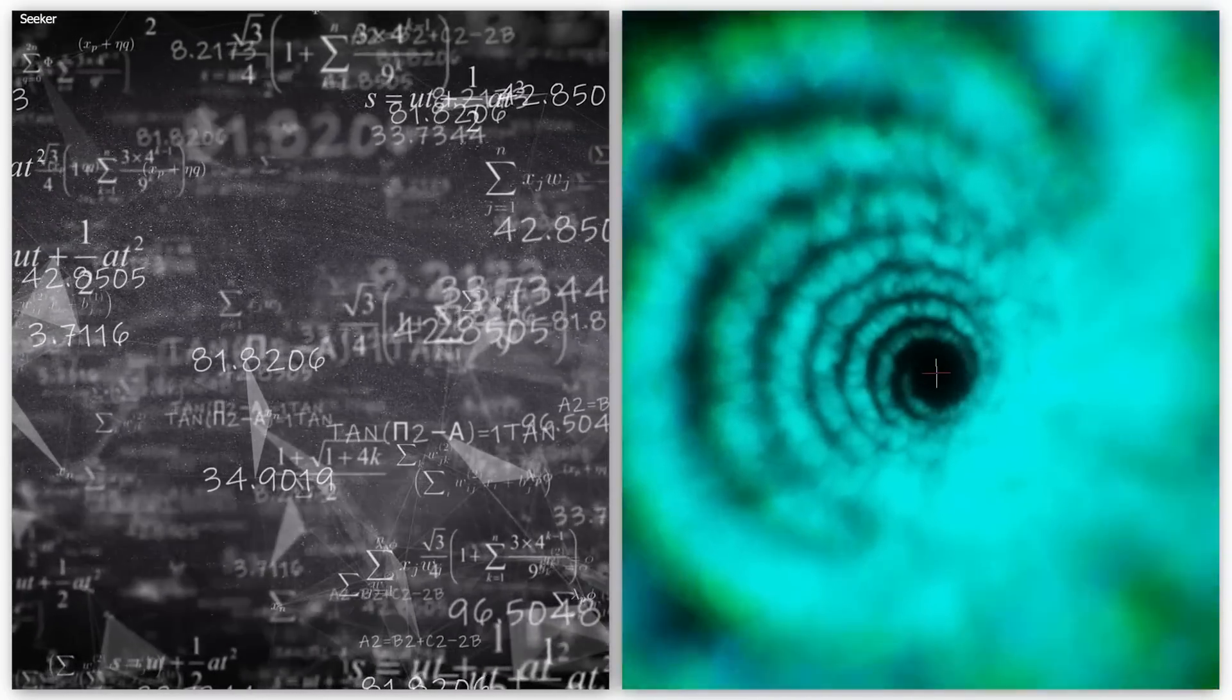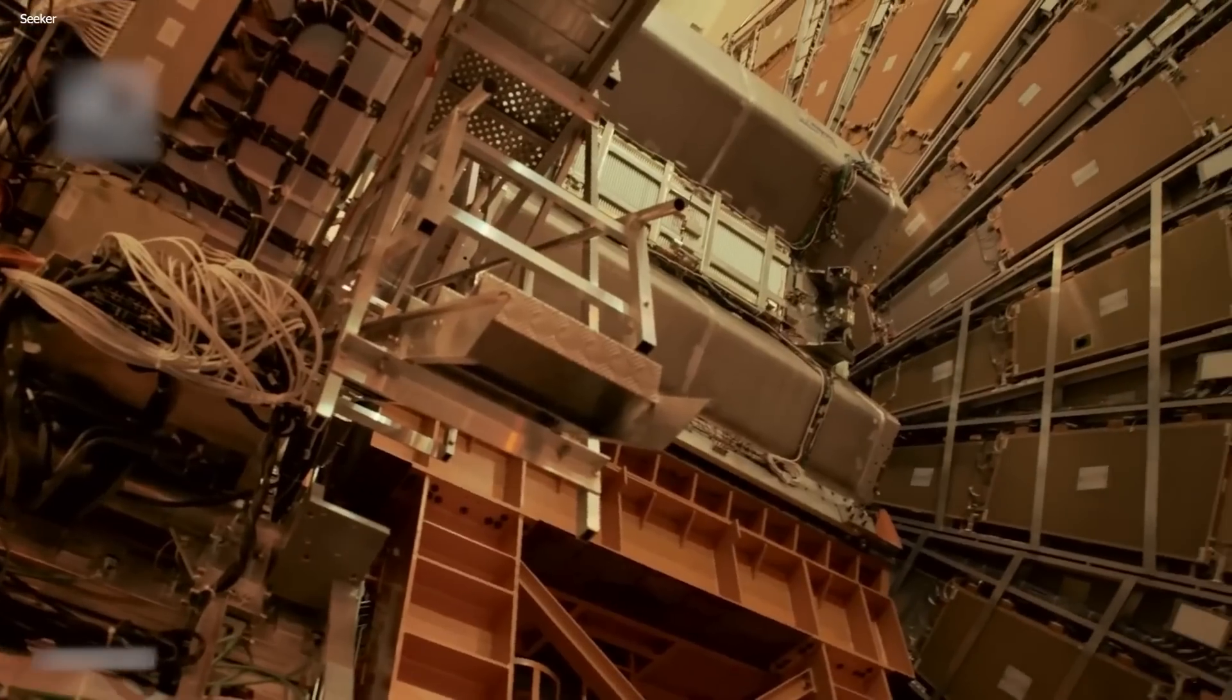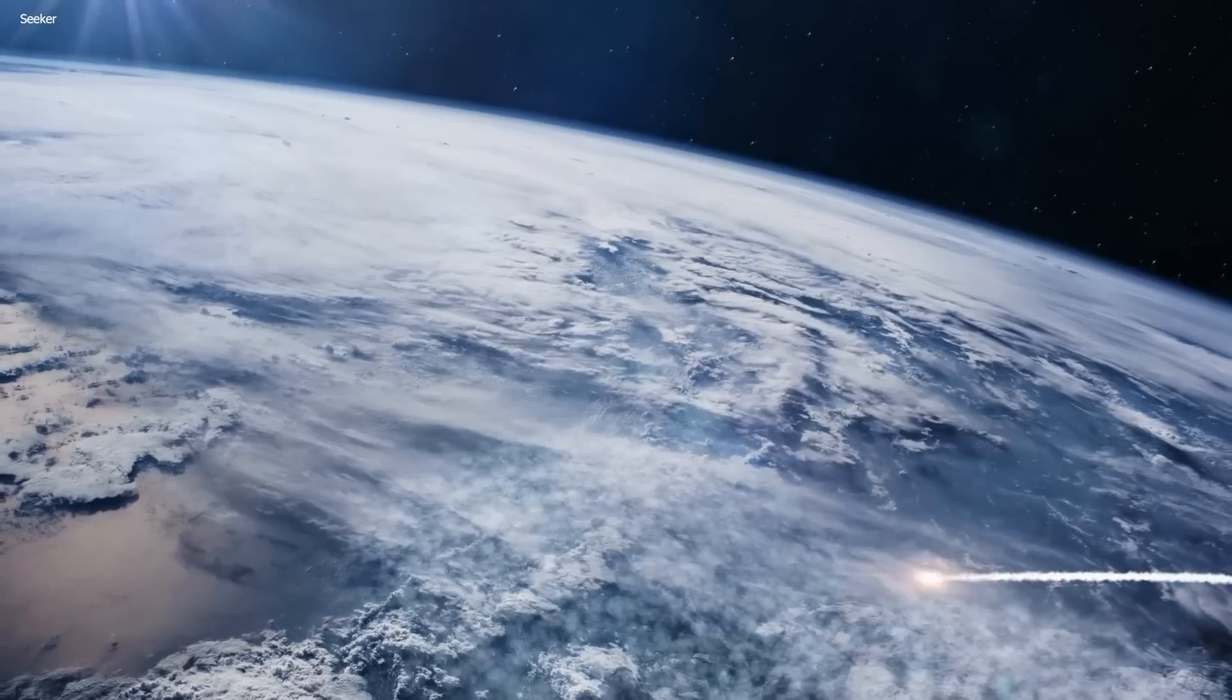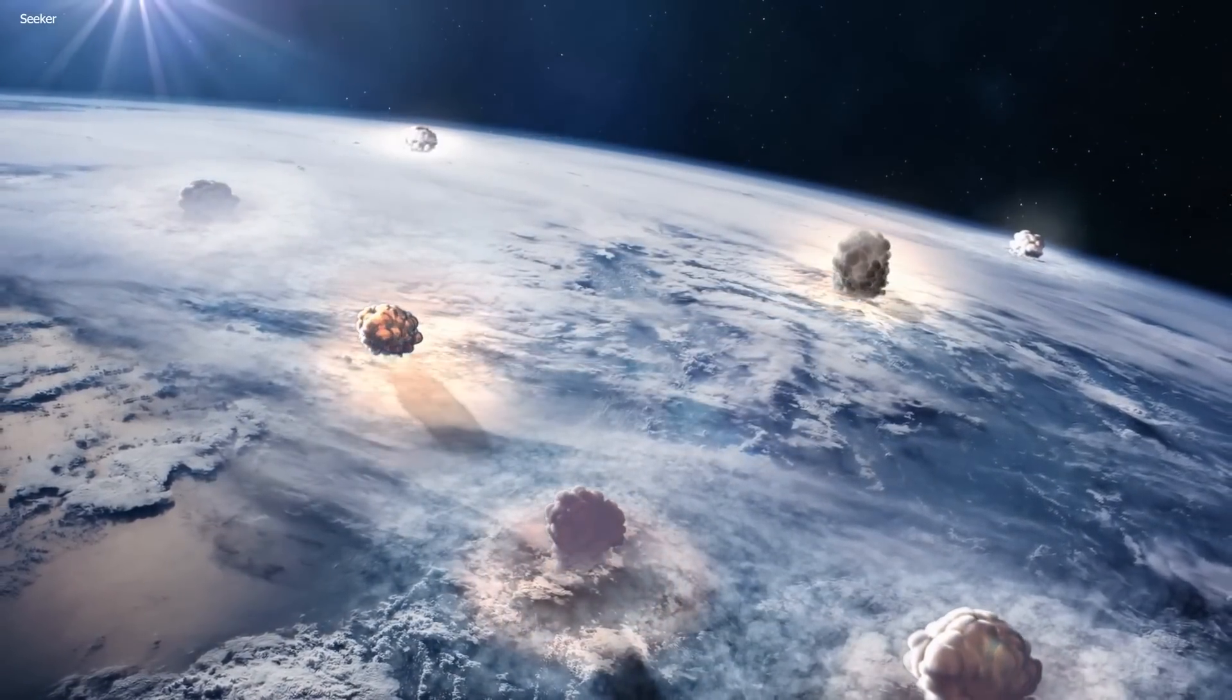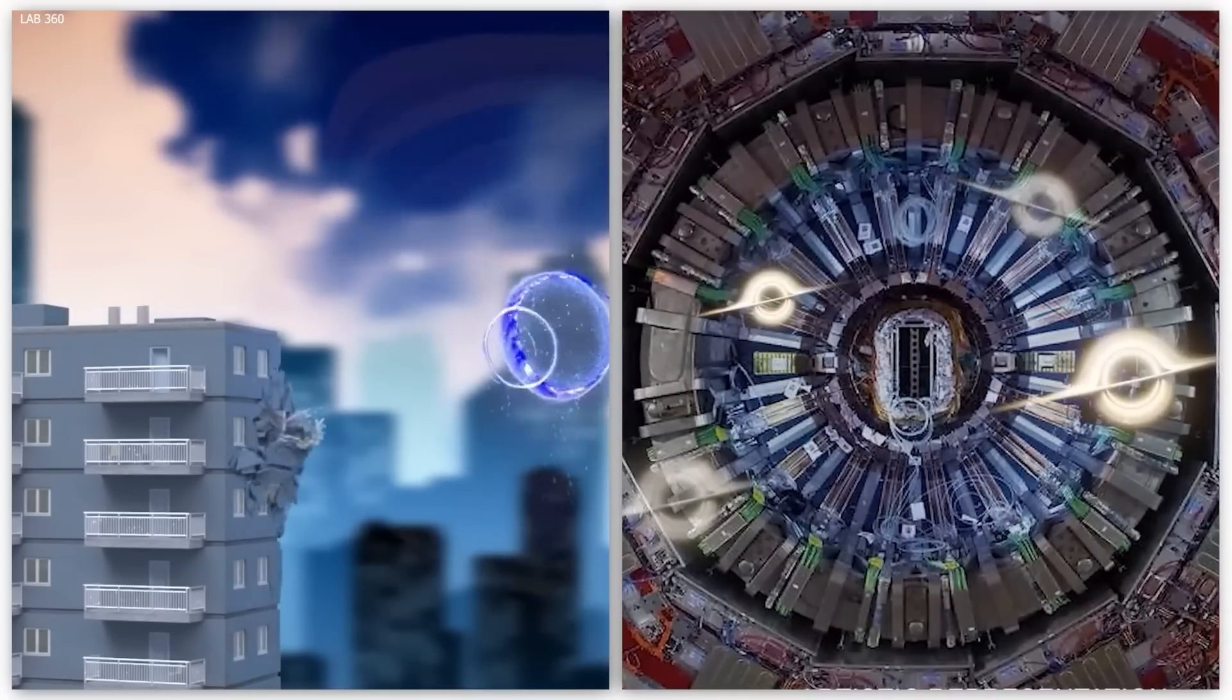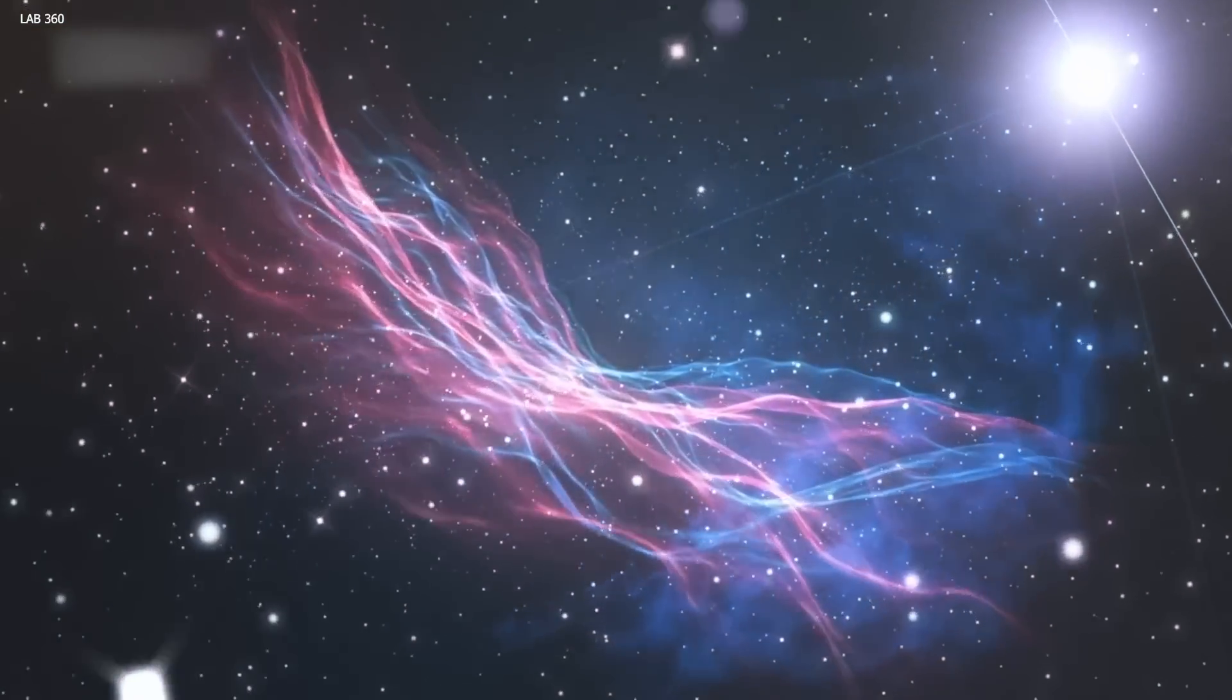This apocalyptic theory revolves around the idea of a false vacuum, a theoretical state of space where the energy is not at its lowest possible level. If the LHC were to create a false vacuum, it could trigger a series of catastrophic events that would ultimately lead to the end of everything we know and love. This doomsday scenario may seem like a far-fetched idea, but it is a real concern for some experts. The LHC experiments could potentially create the conditions necessary for a false vacuum to form, leading to the creation of black holes that could swallow entire galaxies. The risks associated with a false vacuum are so profound that they could change everything we know about the universe.